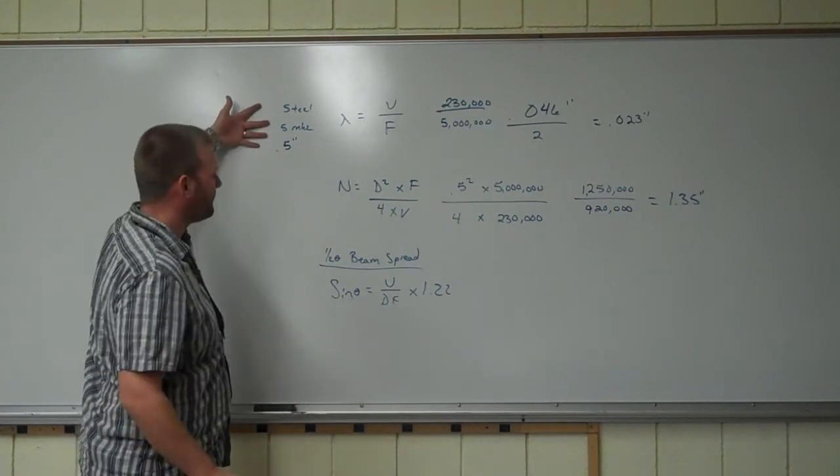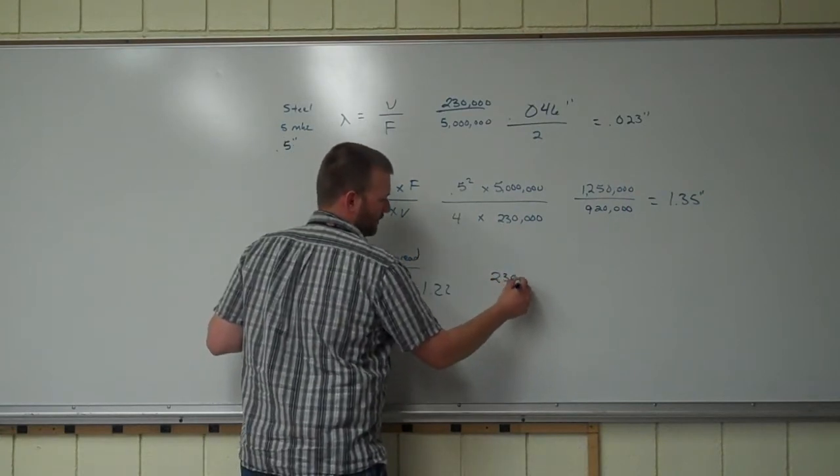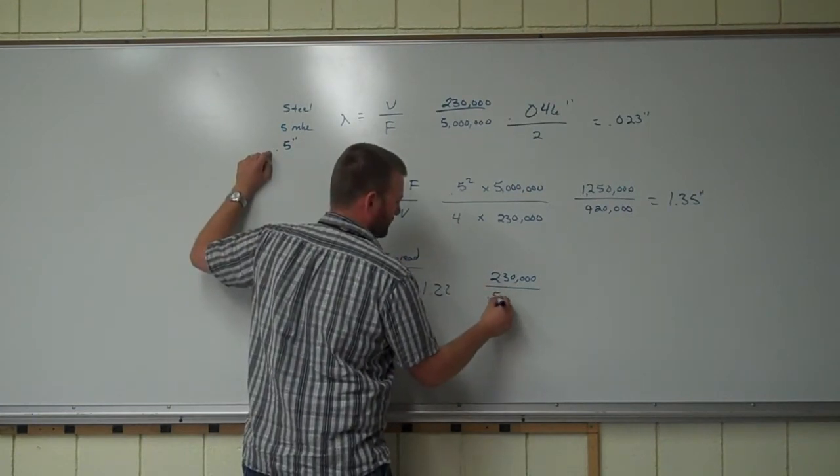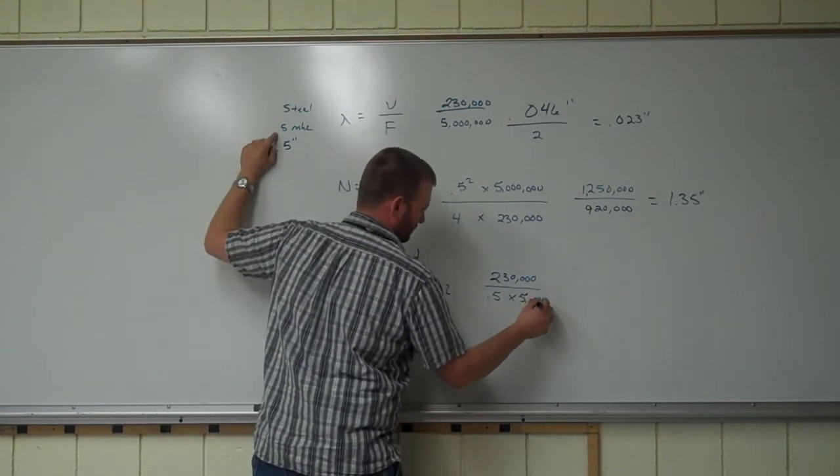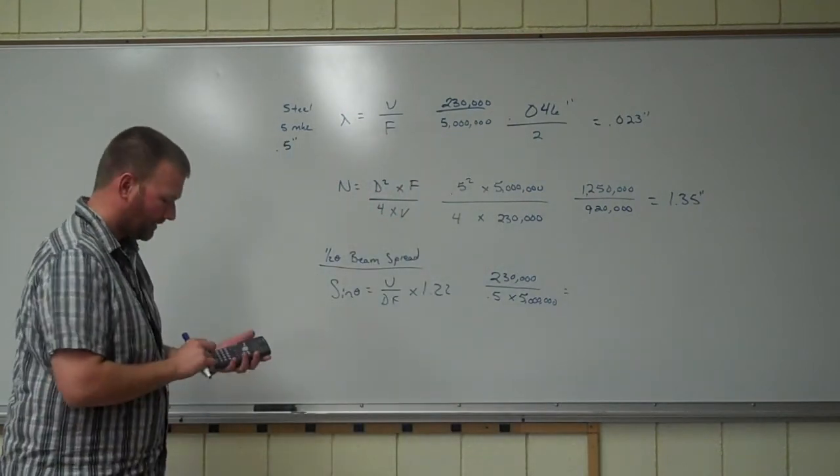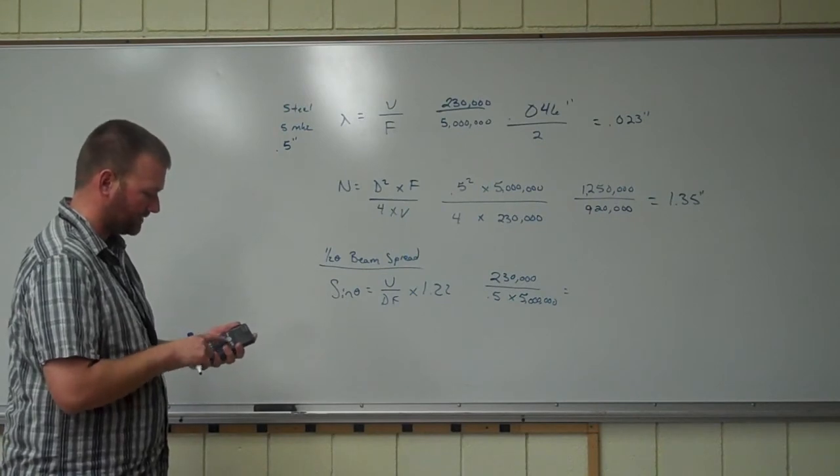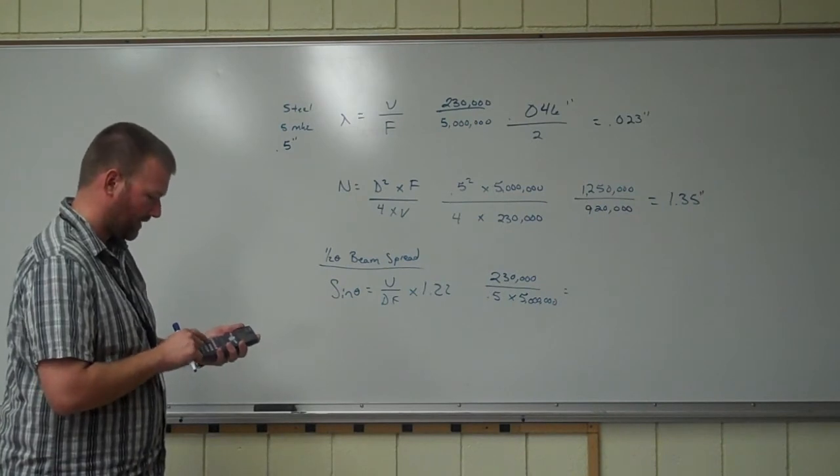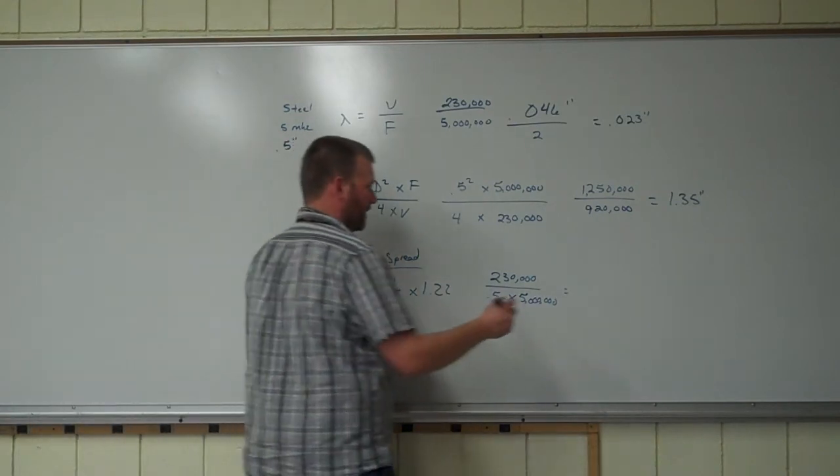We're still keeping these same numbers, just plugging them in. 230,000. Diameter. There's our diameter. Frequency. 5,000,000. What's that going to tell us here? We have 230,000 divided by 0.5. Let me get a couple parentheses in there. Times 5,000,000.